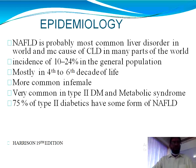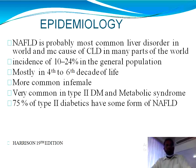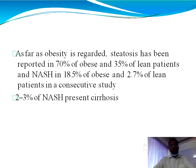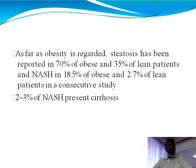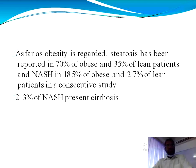All components of metabolic syndrome are independently associated with the development of fatty liver disease and NASH, with particularly strong associations with diabetes, obesity, and hypertriglyceridemia. Steatosis has been reported in about 70 percent of obese patients and 35 percent of lean patients. NASH is seen in about 18.5 percent of obese and 2.7 percent of lean patients in different consecutive studies.